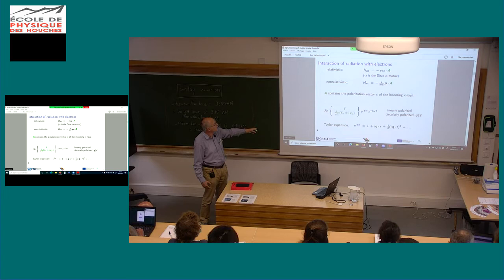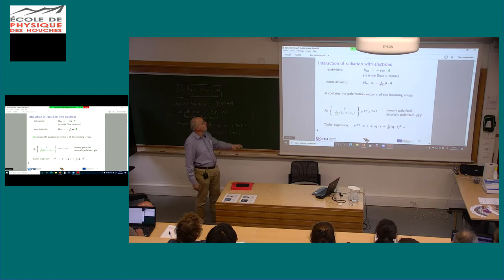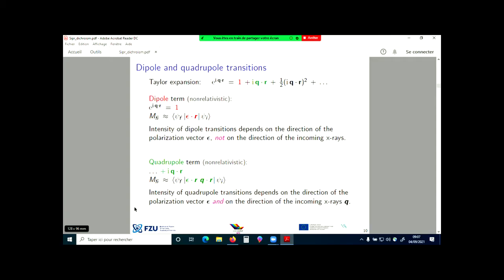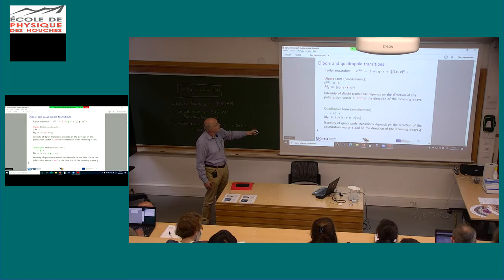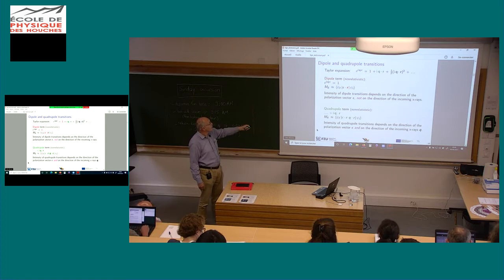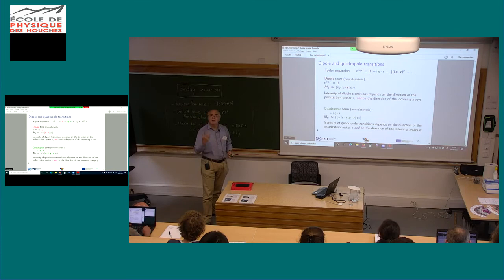The amplitude of the photons — the X-rays — is either linearly or circularly polarized. This exponential can be expanded as a multipole expansion. You can focus on the first term, which gives you the dipole term, or add another term that gives you the quadrupole term. After some algebra, you get a matrix element that contains the polarization, so the intensity of the dipole transition depends on the direction of the polarization vector. That is why we have dichroism.